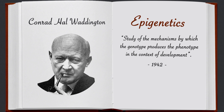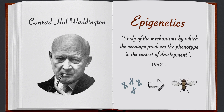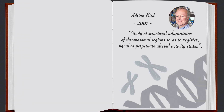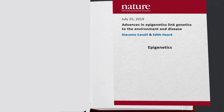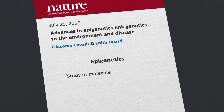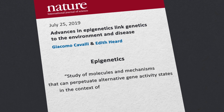Conrad Waddington defined epigenetics in 1942 as the study of the mechanisms by which the genotype produces the phenotype in the context of development. Since then, epigenetics was redefined multiple times. We define epigenetics as the study of molecules and mechanisms that can perpetuate alternative gene activity states in the context of the same DNA sequence.